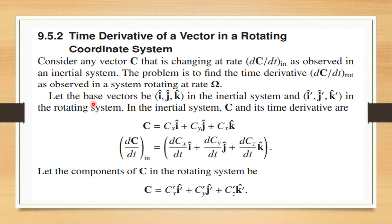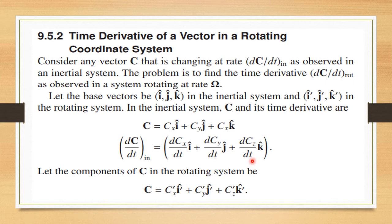We take basis vectors i, j, k in the inertial system and i-dash, j-dash, k-dash in the rotating system. In the inertial system the vector c equals cx i plus cy j plus cz k, and the rate of change dc/dt in the inertial frame equals dcx/dt times i plus dcy/dt times j plus dcz/dt times k. Now we take the components of c in the rotating system.